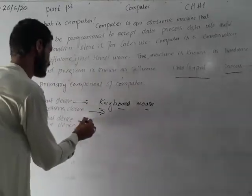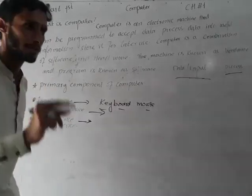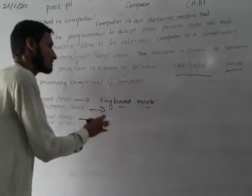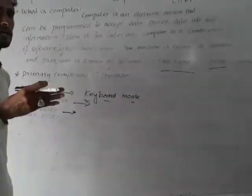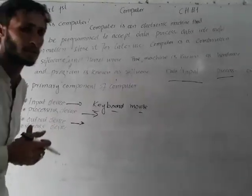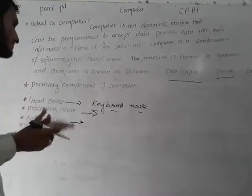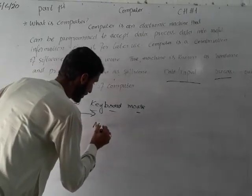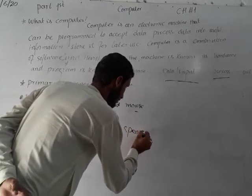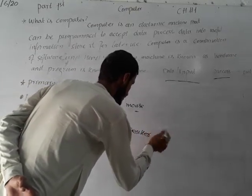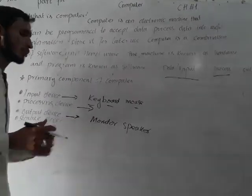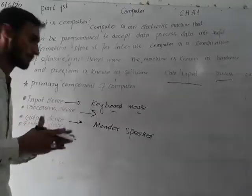The output device is used to display the results of processing. It displays data on a monitor or display device. Monitoring and display devices are used to show the output.